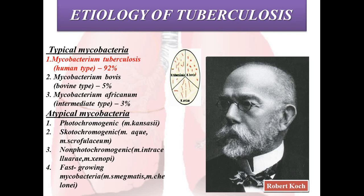Most, but not all, of these species have been found to cause disease in humans. M. tuberculosis human type accounts for 92% of cases, M. bovis bovine type for 5%, and M. africanum intermediate type for 3% of cases.